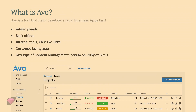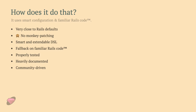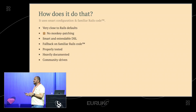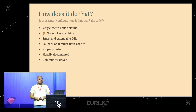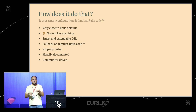They are basically CRUD applications. And if you think about it, you can boil down a lot of applications to CRUD — like Instagram with a feed, detail view, edit button, form, and comments as associations. Or Airbnb, Booking.com. Avo sticks very close to Rails defaults, has no monkey patching, has a smart and extendable DSL, and when the DSL doesn't help you it falls back to familiar Rails code. Avo is properly tested, heavily documented, and community-driven with many contributors.